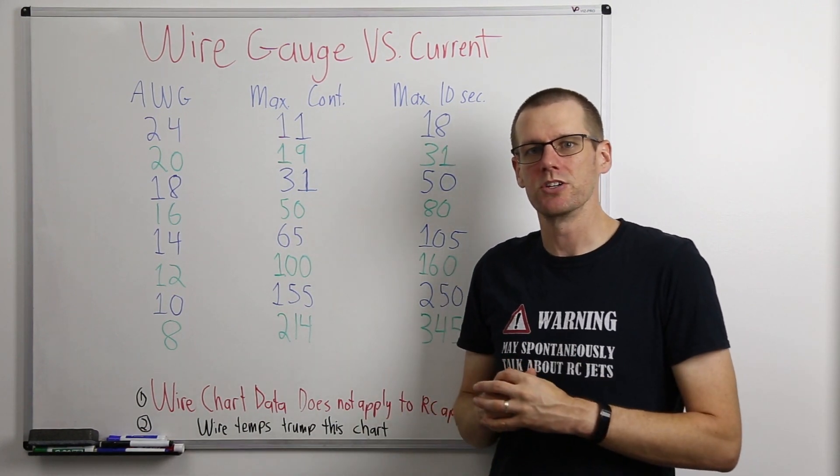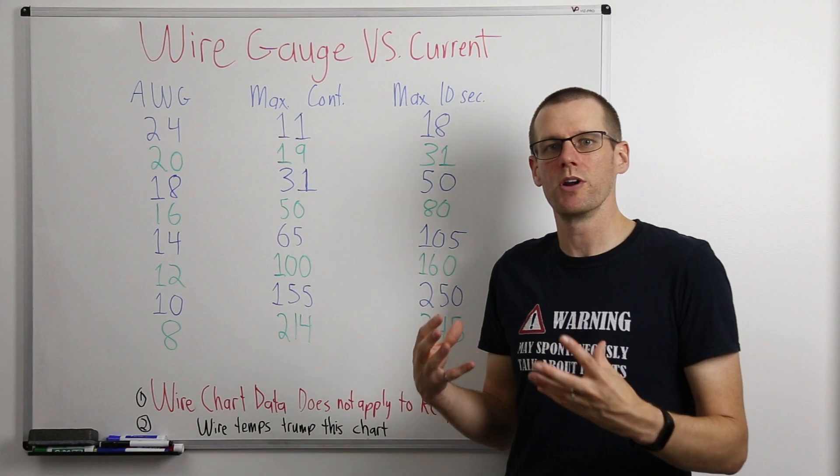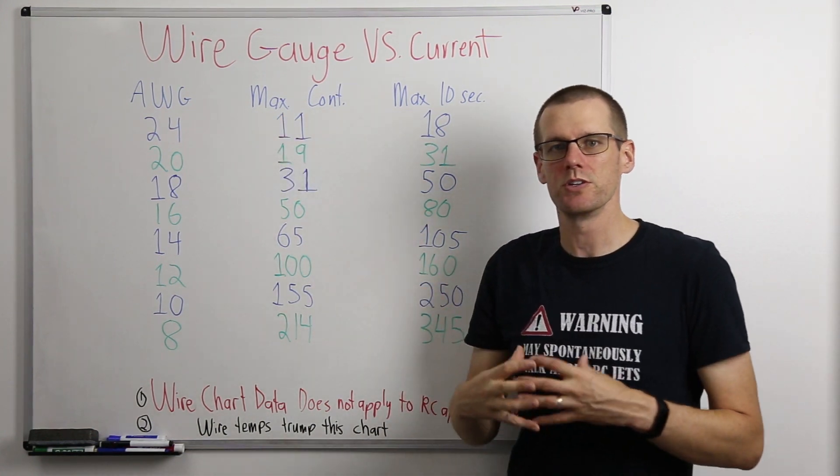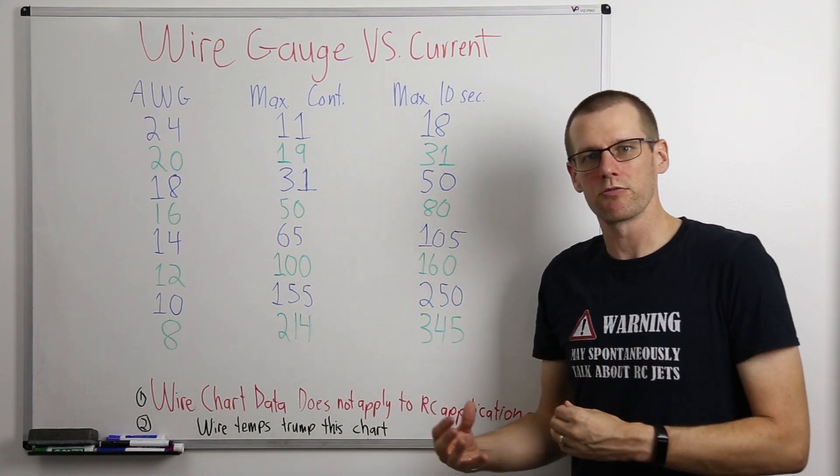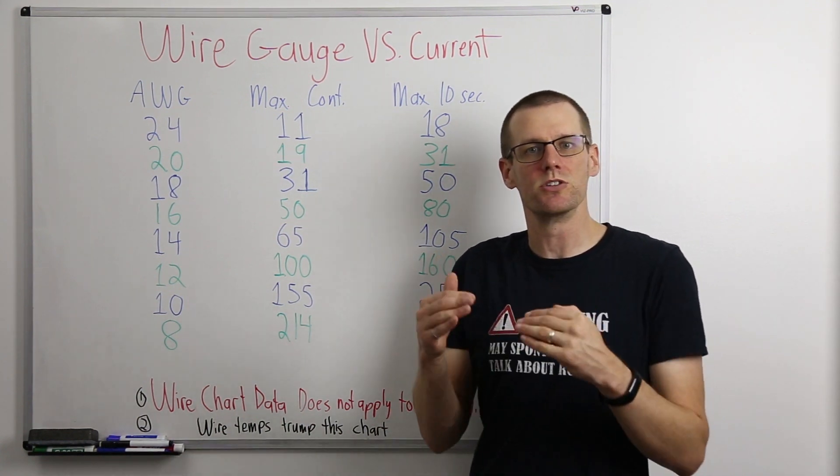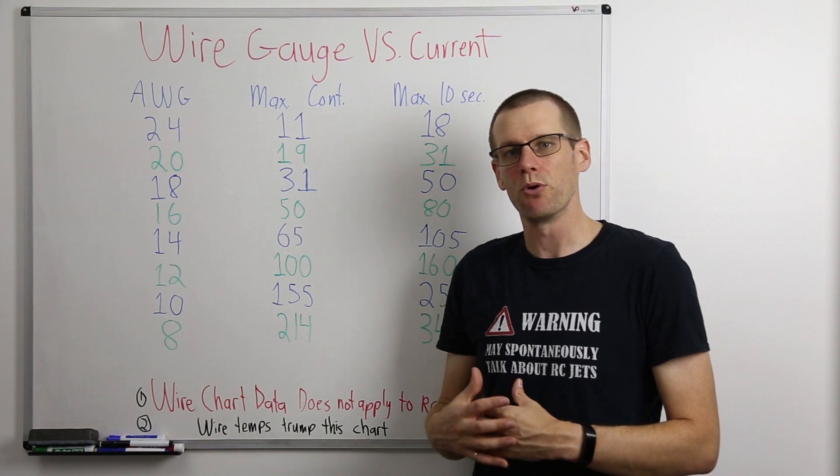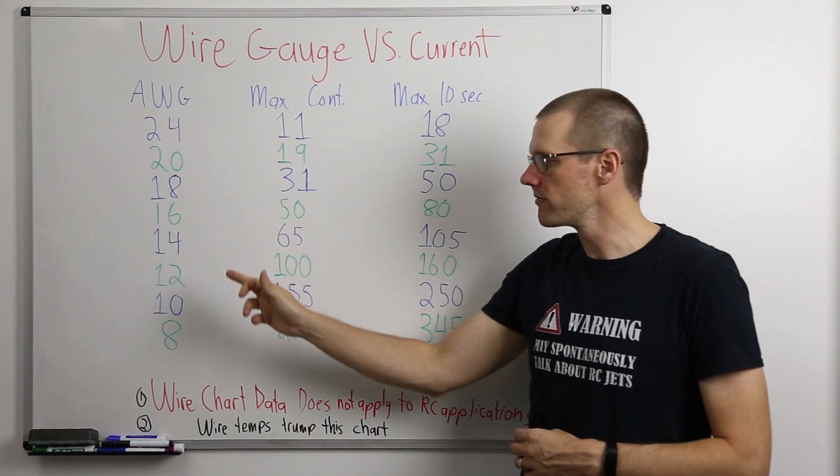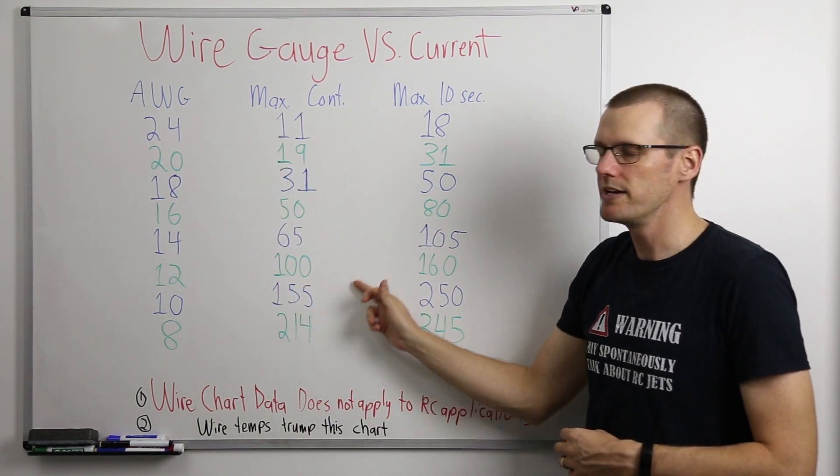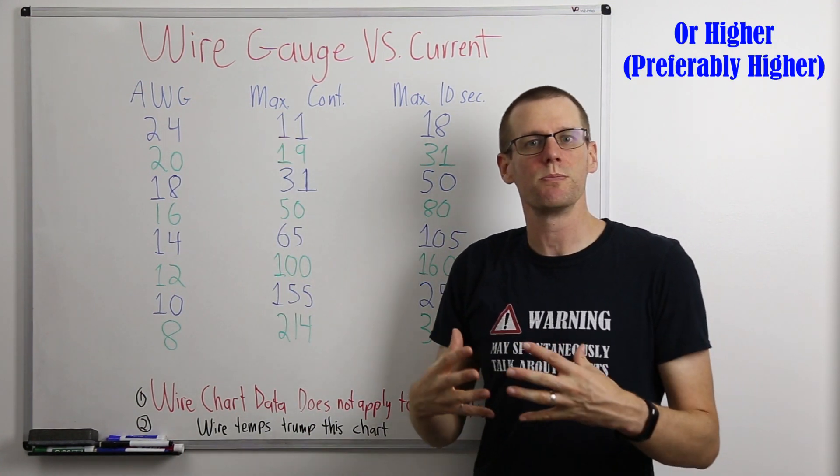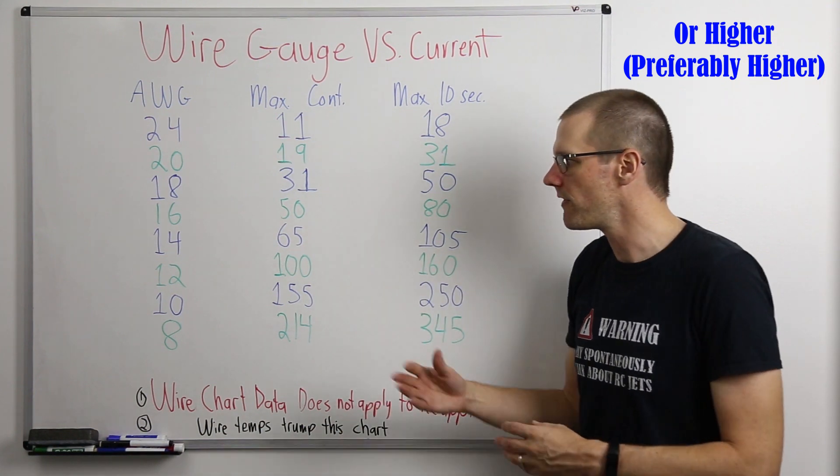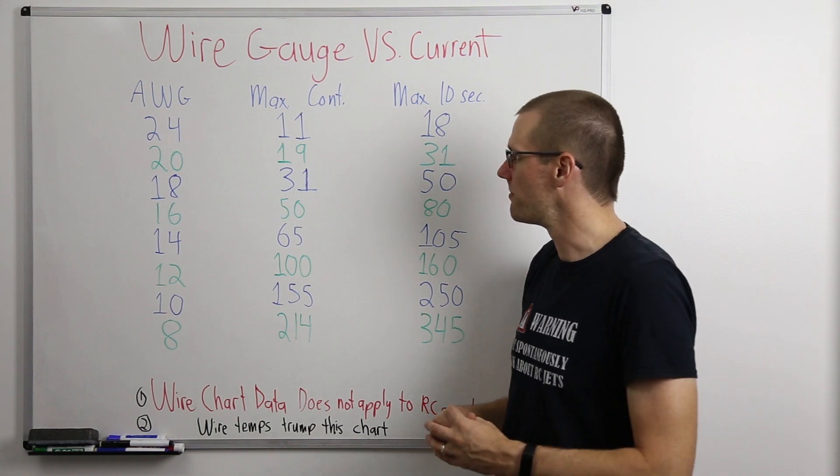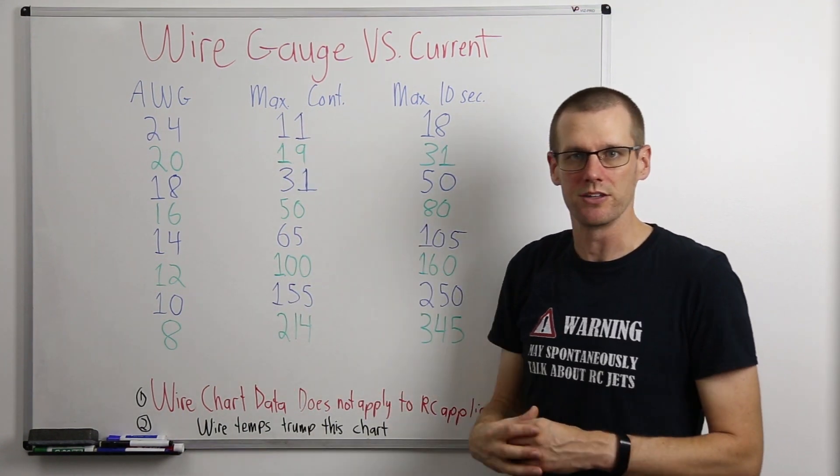In most practical applications, we do not operate our radio controlled vehicles at a maximum continuous current value. We are varying the throttle, which means that we're actually reducing the amount of current that we pull from our battery. So that would mean, as long as you have your speed control and all the rest of your components based on this value here, it should be conservative enough for you to be able to follow this wire gauge chart so that when you do hit the full throttle maximum, you're somewhere within these values.